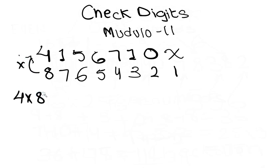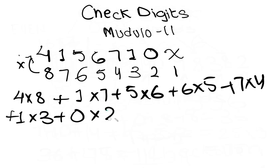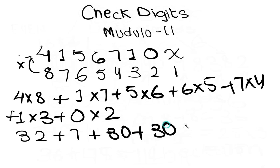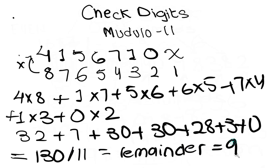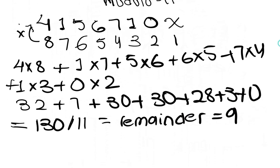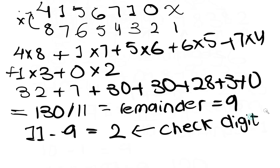Now we multiply each digit by its position number: 4×8 + 1×7 + 5×6 + 6×5 + 7×4 + 1×3 + 0×2, giving us 32 + 7 + 30 + 30 + 28 + 3 + 0, which totals 130. We then divide 130 by 11, which gives a remainder of 9. We subtract the remainder from 11: 11 − 9 = 2. This is the check digit, so we end up with the 8-digit number 41567102.